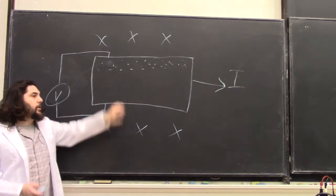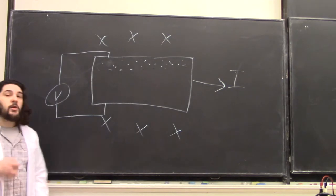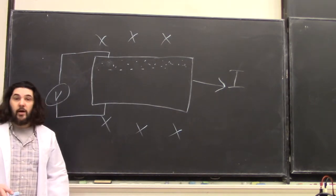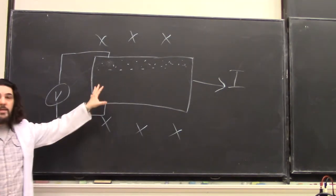So if we know the properties of the material, we can measure this voltage to determine the strength and direction of the magnetic field. And this is the Hall effect.